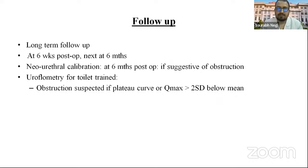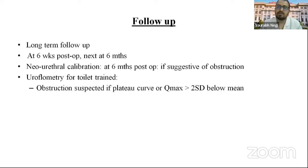In follow-up, long-term follow-up is generally required. Post-operatively, the first visit should be at six weeks post-op and the next at six months. New urethral calibration is required at six months post-op if there is suspicion of obstruction. Uroflowmetry is indicated for toilet-trained children; obstruction is suspected if there is a plateau curve on uroflowmetry or if Qmax is more than two standard deviations below the mean.